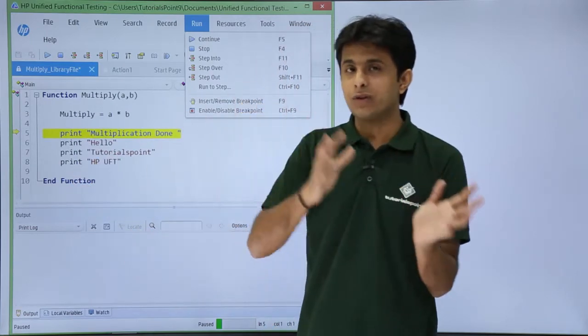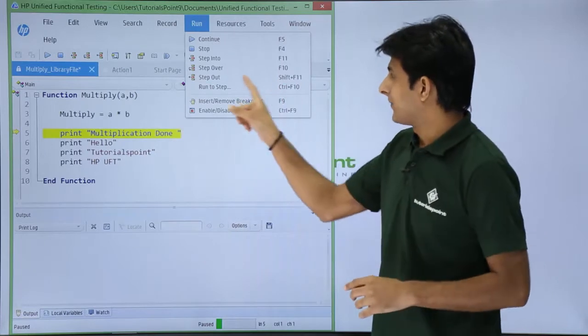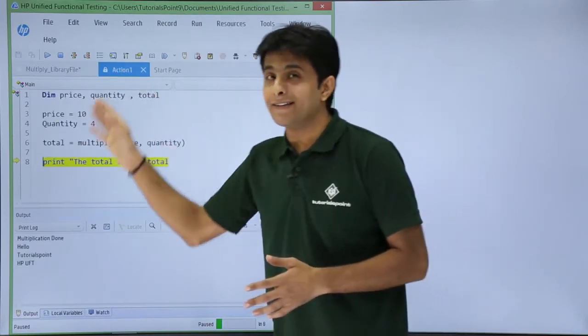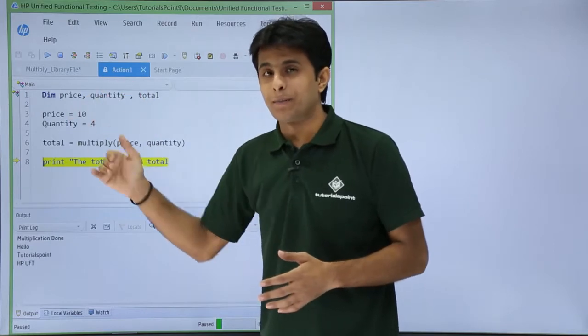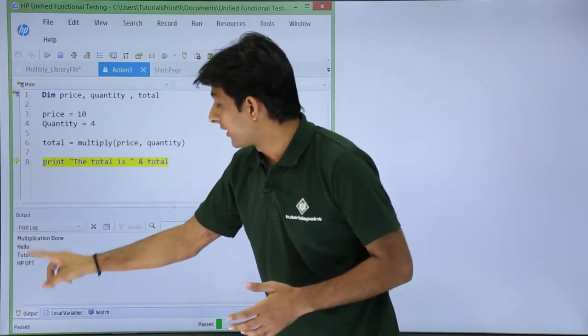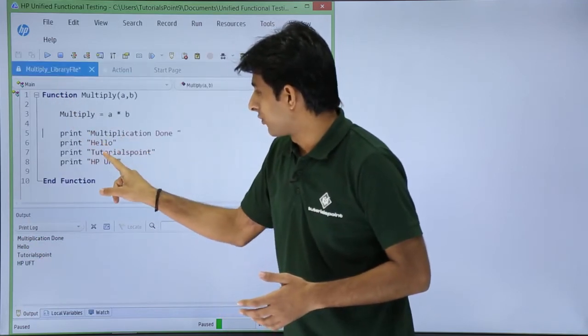I'll just click on step out. You see it didn't execute step by step, but it has executed all the areas. If you see, that's hello tutors point hpu of t - hello tutors point hpu of t.